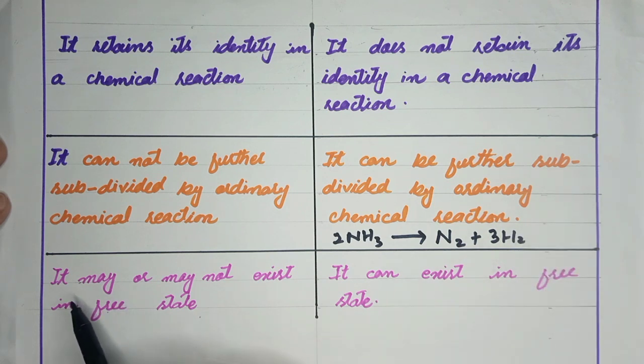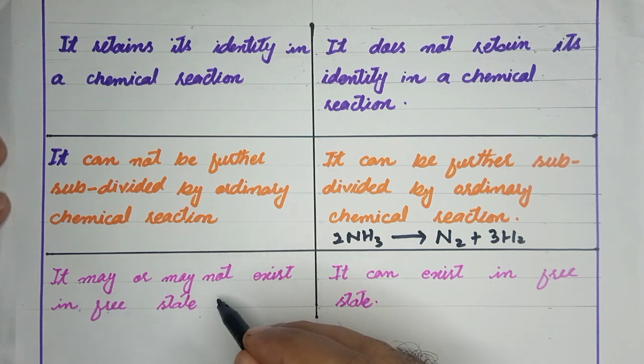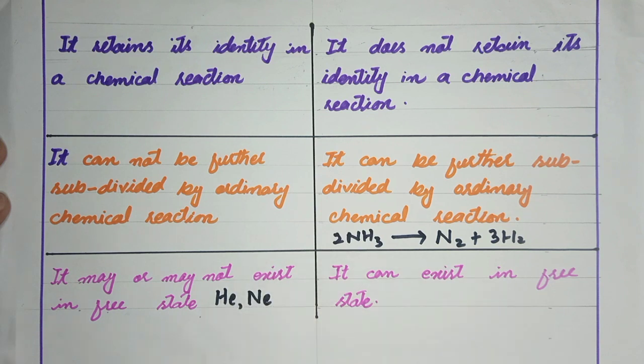Atom may or may not exist in free state. As you know, the noble gases exist in free state because they are stable. Hydrogen cannot exist as single atoms. Sodium, potassium—these are reactive elements in combined form.